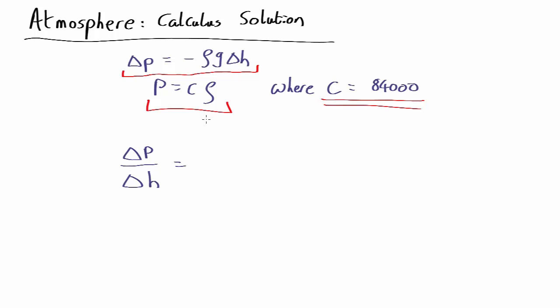equals minus the density, but we put the pressure in here, so we don't have density in. So that's minus, density is pressure over C times g. If we take the limit, that's telling us that it's dP by dh.